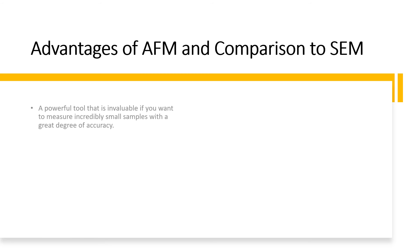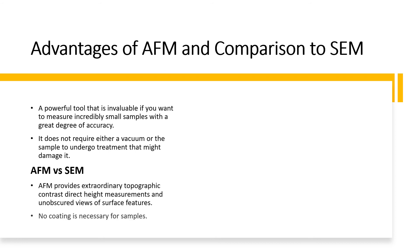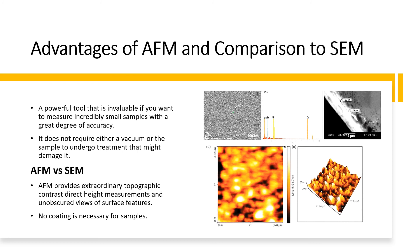Regarding the advantages of AFM, it is a powerful tool that is invaluable for measuring incredibly small samples with a great degree of accuracy. Unlike rival technologies, it does not require either a vacuum or sample treatment that might damage it. At the limits of operation, researchers have demonstrated atomic resolution in high vacuum and even in liquid environments. In comparison with the SEM, AFM provides extraordinary topographic contrast, direct height measurements, and detailed visualization of surface features. Additionally, no conductive coating is necessary for samples.